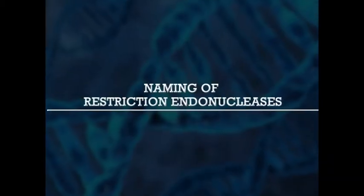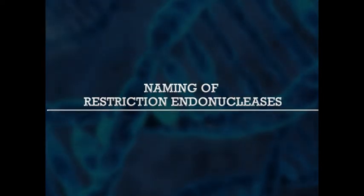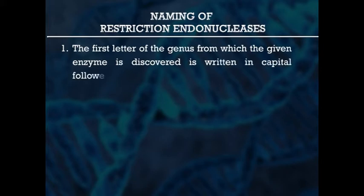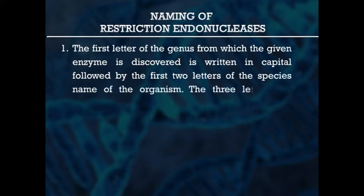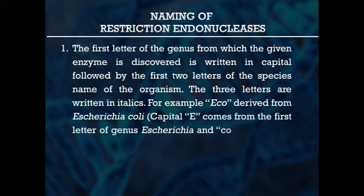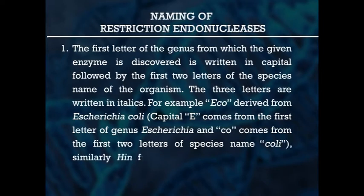Now let us see the naming of Restriction Endonucleases. The Restriction Endonucleases are named by following a certain pattern. First, the first letter of the genus from which the enzyme is discovered is written in capital, followed by the first two letters of the species name of the organism. The three letters are written in italics. For example, EcoR is derived from Escherichia coli: capital E comes from the first letter of the genus Escherichia, and CO comes from the first two letters of the species name coli.